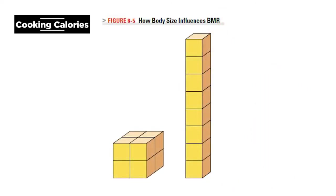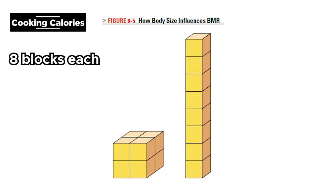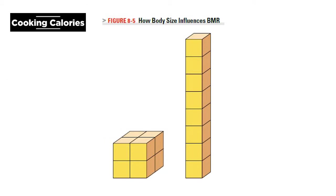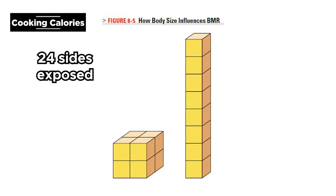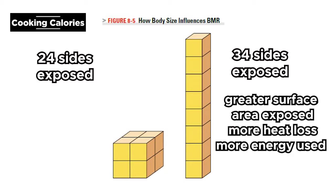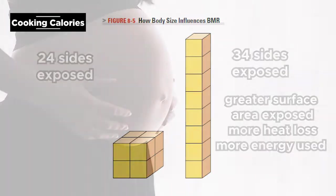Let's take a look at these structures to understand how height influences basal metabolic rate. Each of these structures is made of 8 blocks — they weigh the same, but are arranged differently. The short, wide structure has 24 sides exposed, and the tall, thin one has 34. Because the tall, thin structure has greater surface area, it will lose more heat, thus expend more energy than the short, wide one.